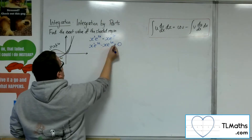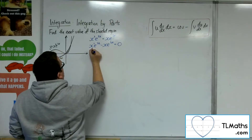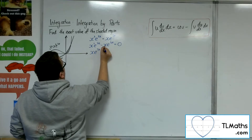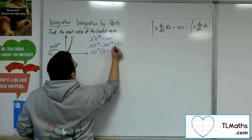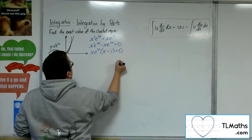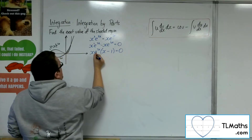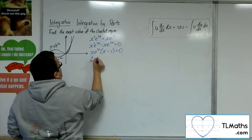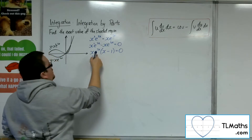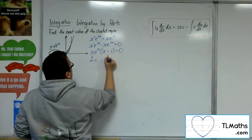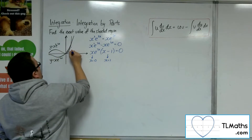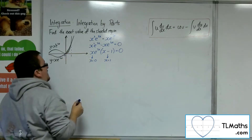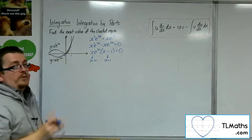Factorising the left hand side, we can factor out x and e to the 2x, leaving x minus 1 inside the bracket. So either x equals 0, e to the 2x can't be 0, or x equals 1. So the intersection points are 0 and 1, meaning I'm integrating between 0 and 1.